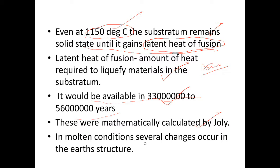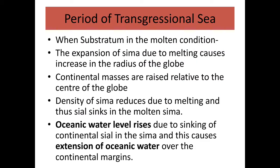These values were mathematically calculated by Joly. In molten conditions, several changes occur in earth's structure. There are two periods: the period of transgressive sea and the period of regressive sea. In the period of transgressive sea, when the substratum is in molten condition, expansion of sima due to melting causes an increase in the radius of the globe. Continental masses are raised relative to the center of the globe, and the density of sima reduces due to melting.